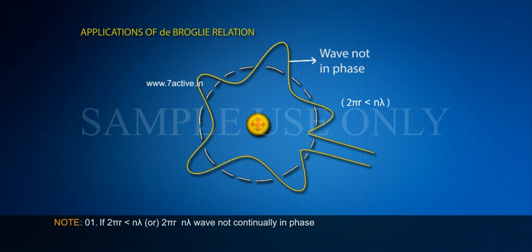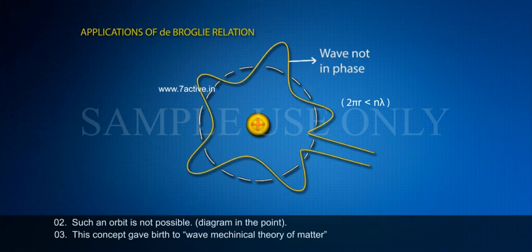If 2πr ≠ nλ, the wave is not continually in phase. Such an orbit is not possible. This concept gave birth to the wave mechanical theory of matter.